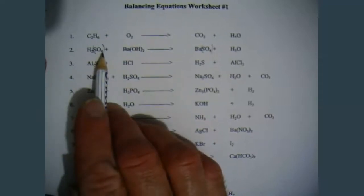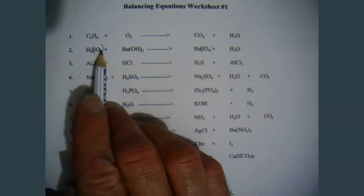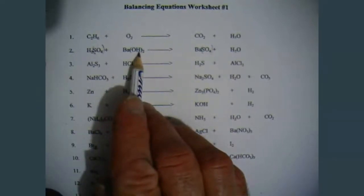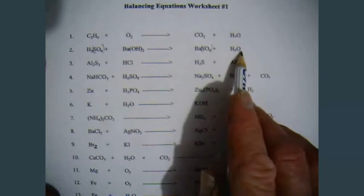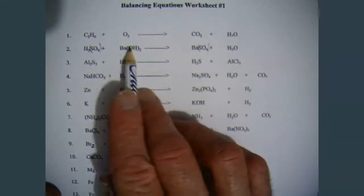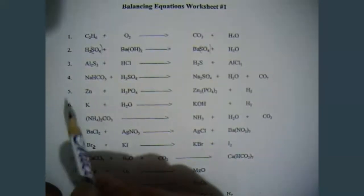First of all, I'm going to balance the polyatomic ion sulfate. So I have sulfate on the left, sulfate on the right. They're good. Now, here I have OH, which is hydroxide, but on this side it's water. So I can't balance the hydroxide as a single unit. I have to balance the oxygens, and I have to balance the hydrogens.